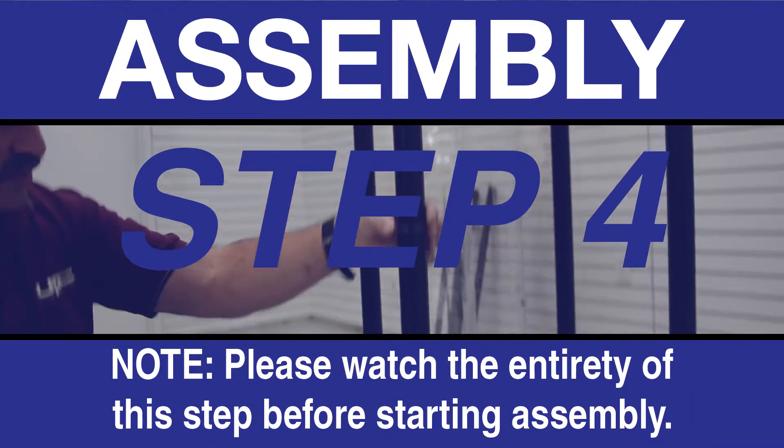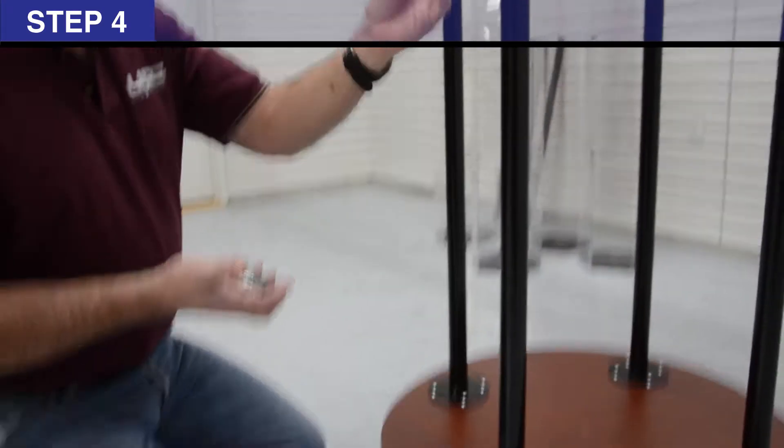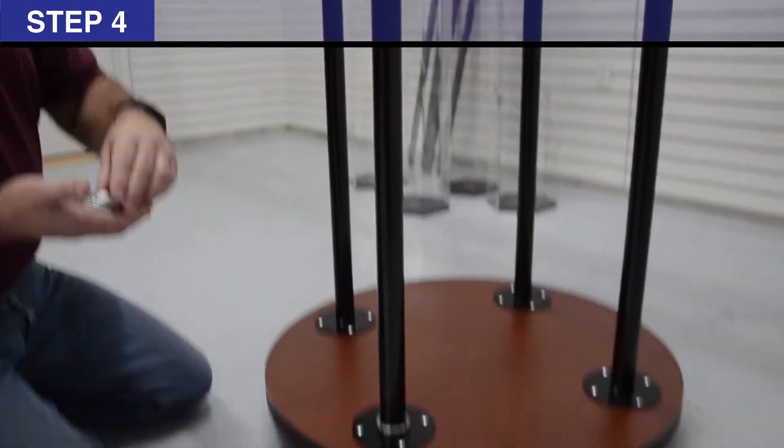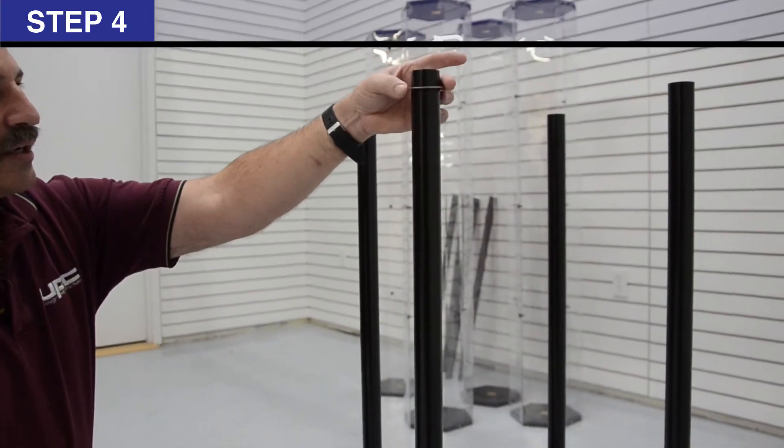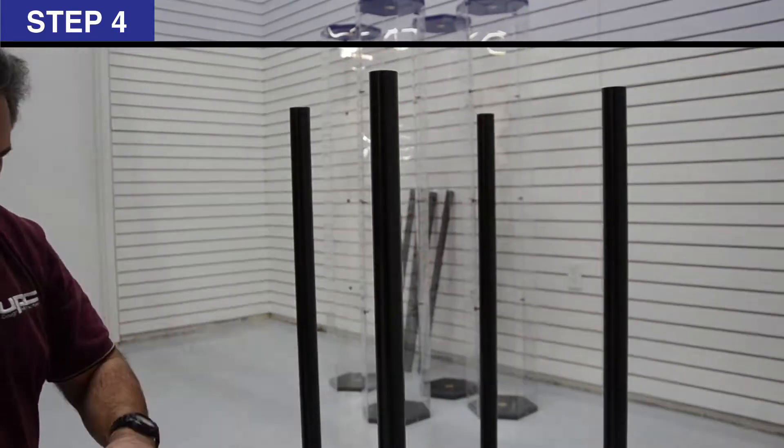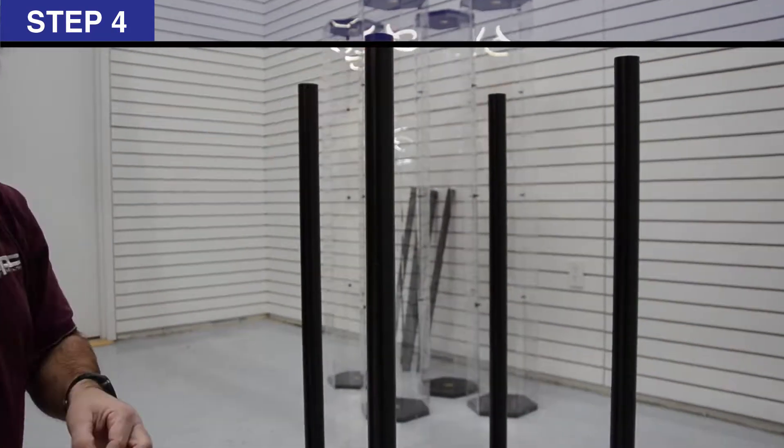Step 4: First slide 1 washer G over bottom pole O. Next slide bearing F and repeat with 1 washer G. Repeat step 4 on 3 other bottom poles O.